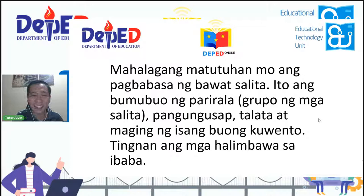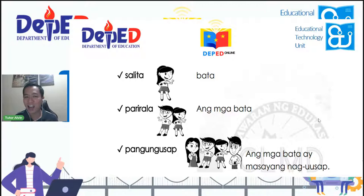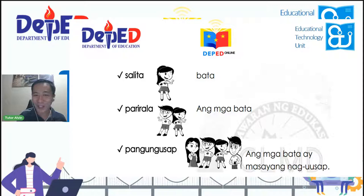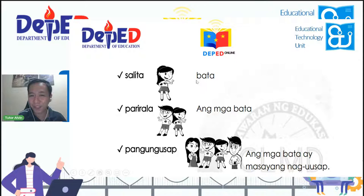Mag-uumpisa tayo sa salita. Ano ang nakikita ninyo? Ang tawag natin sa kanya ay bata. Pag sa parirala, may dalawa kayong nakita — ang tawag natin: ang mga bata. Sa pangungusap: ang mga bata ay masayang nag-uusap. Ulitin natin. Bata. Pag sa parirala: ang mga bata. Sa pangungusap: ang mga bata ay masayang nag-uusap.